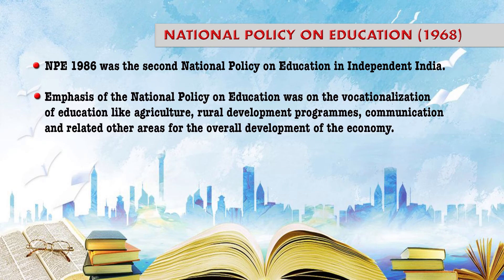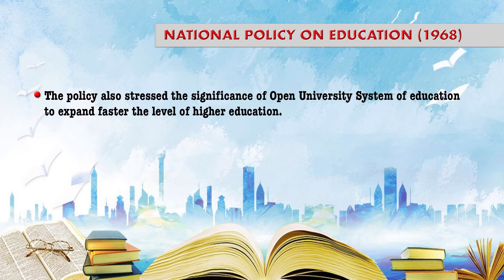In NPE 1986, emphasis of the policy was on the vocationalization of education — like agriculture, rural development programs, communication, and related areas — for the overall development of the economy. So how to develop skills and competencies, how to provide work to every learner in the country, was a key aim. That is why it focused on developing vocational education and skill-based education related to agriculture, rural development programs, and communication technology.